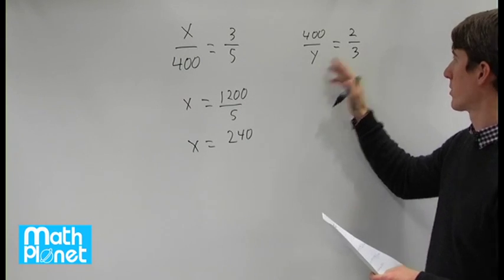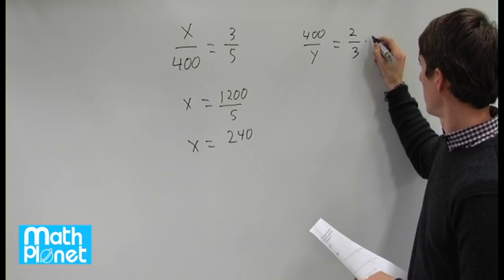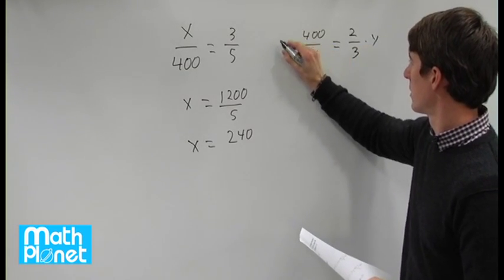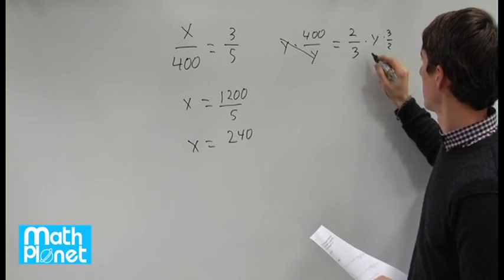So now we want to solve for y. We can multiply both sides by y and then by 3 halves. So this cancels, multiply both sides by 3 halves to cancel here.